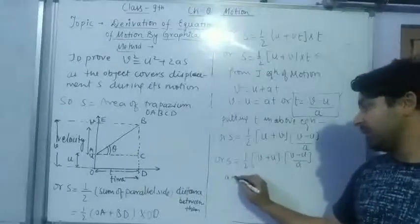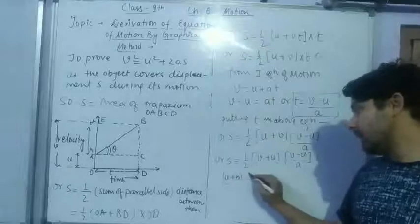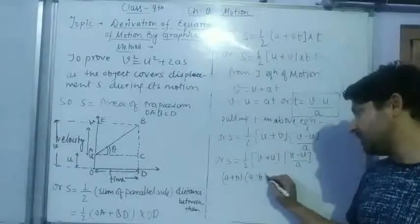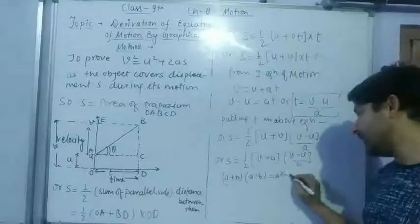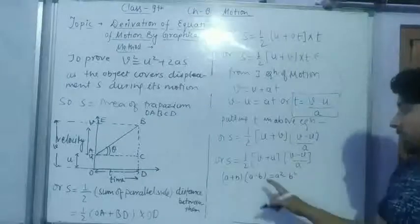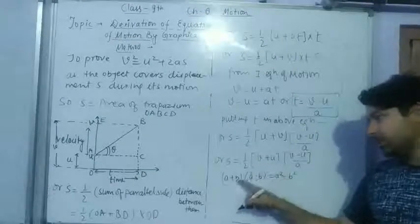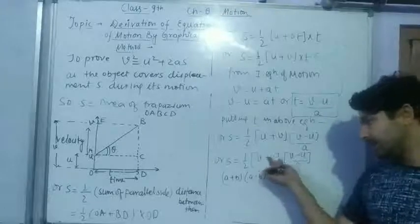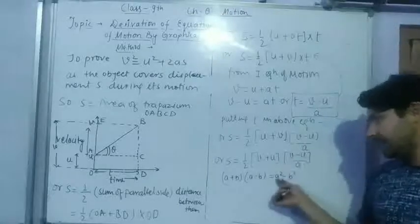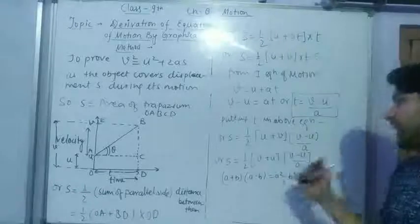That is V plus U and V minus U, which will be equal to V² minus U². So if we take this part, then the equation is equal to V² minus U² upon 2A.